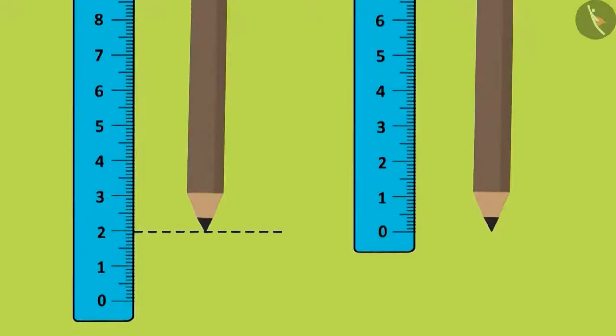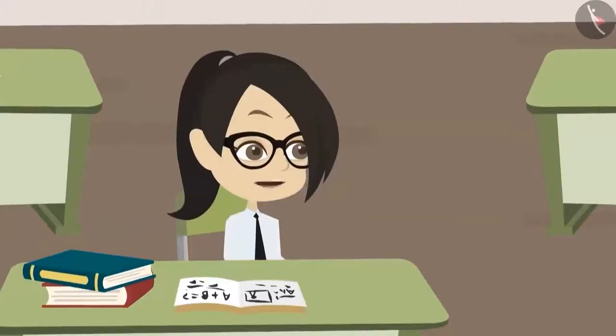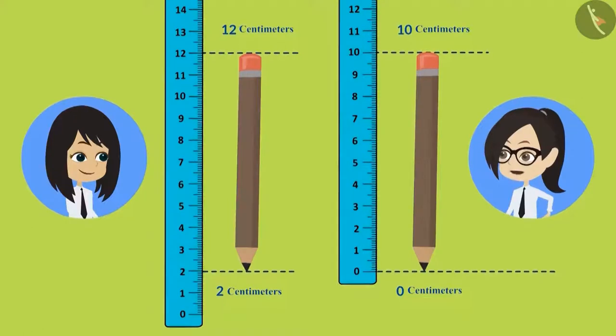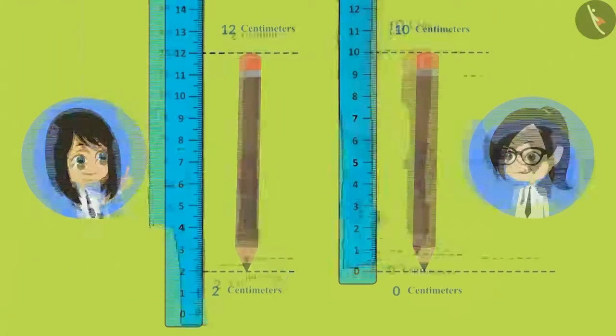You have placed the bottom end of your pencil at 2 centimeters, while I have placed the bottom end of my pencil at 0 centimeters. What difference does that make? It leads to incorrect measurements. To measure the correct length of objects using a scale, we should place their lower end at 0, like I have done.